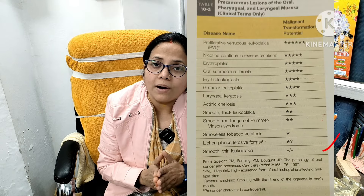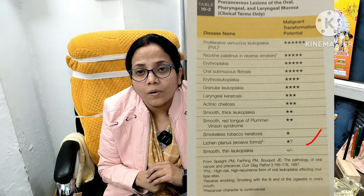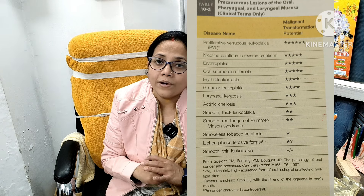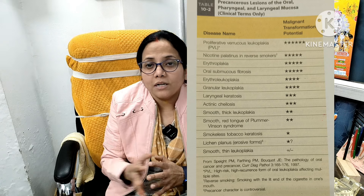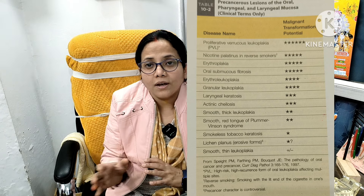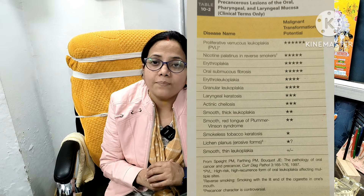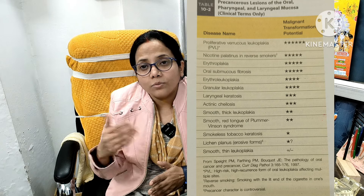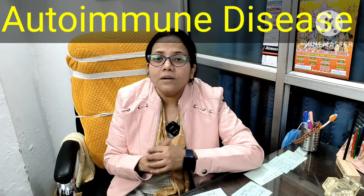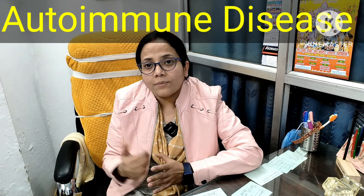Regarding Lichen Planus — don't think it will necessarily become cancer. The malignant transformation rate is only 0.3%, which is very rare. Some people worry and ask why these lines are forming even when they don't eat anything wrong. This is an autoimmune disease. I have made a video about this before, which you can see through the eye button.